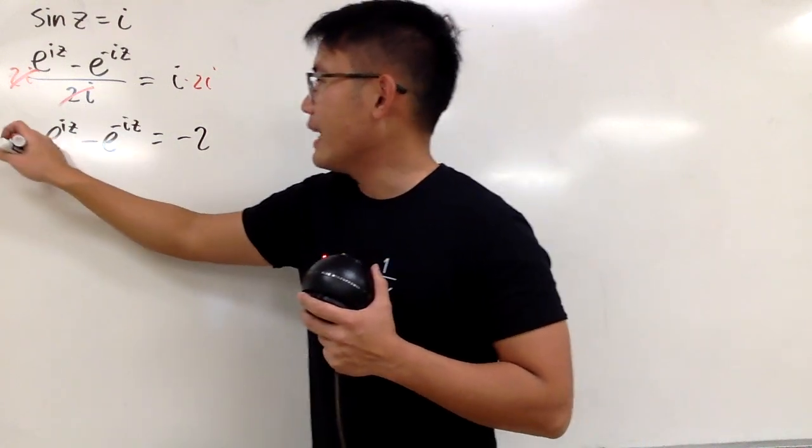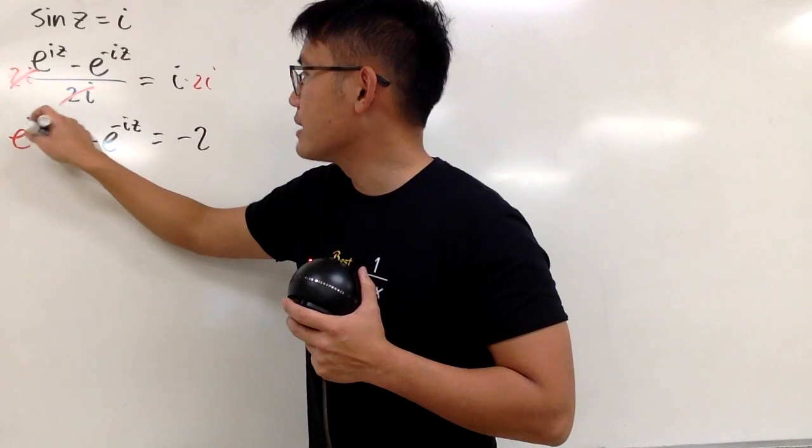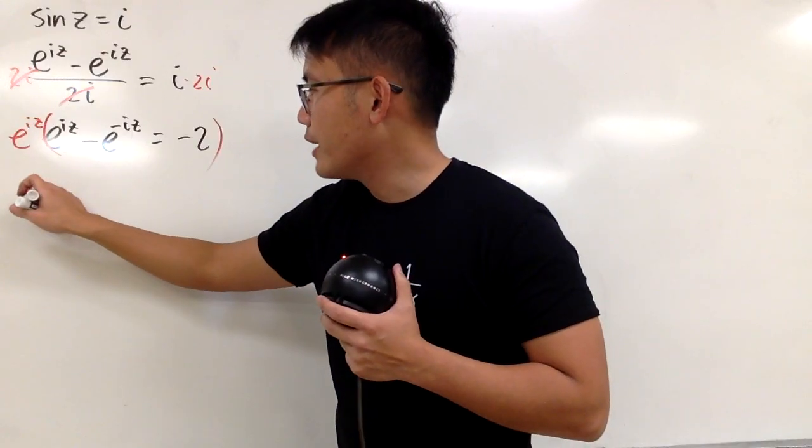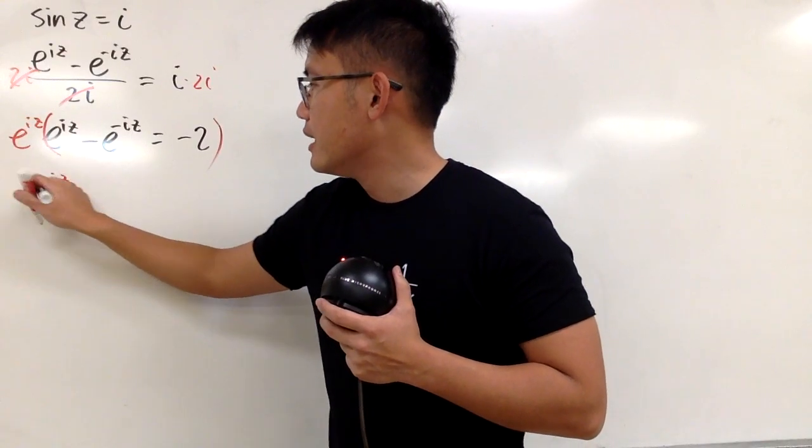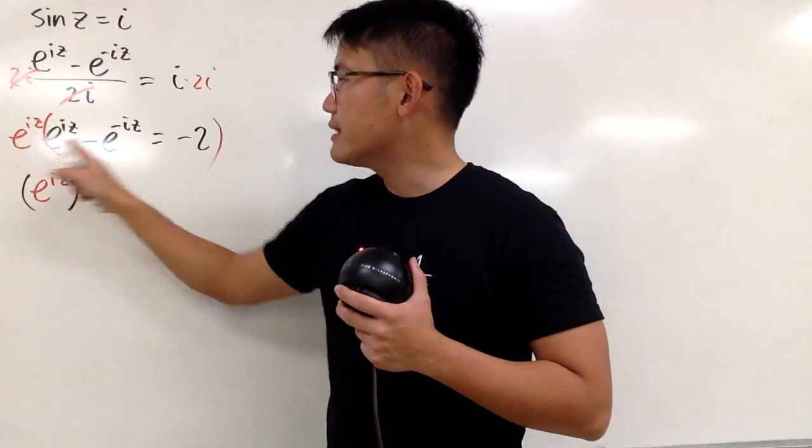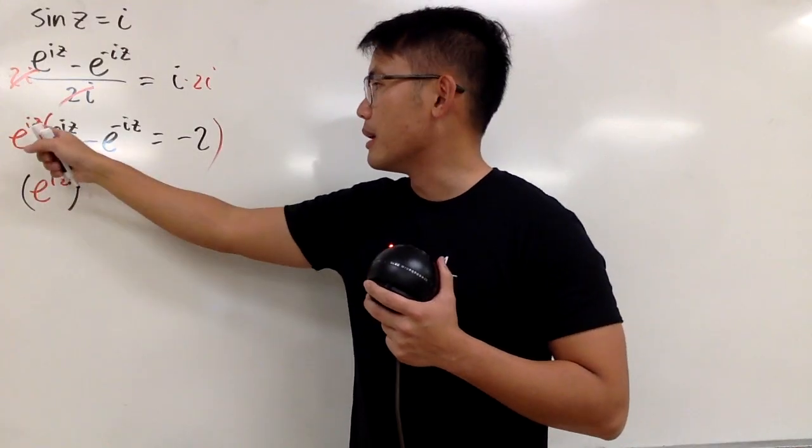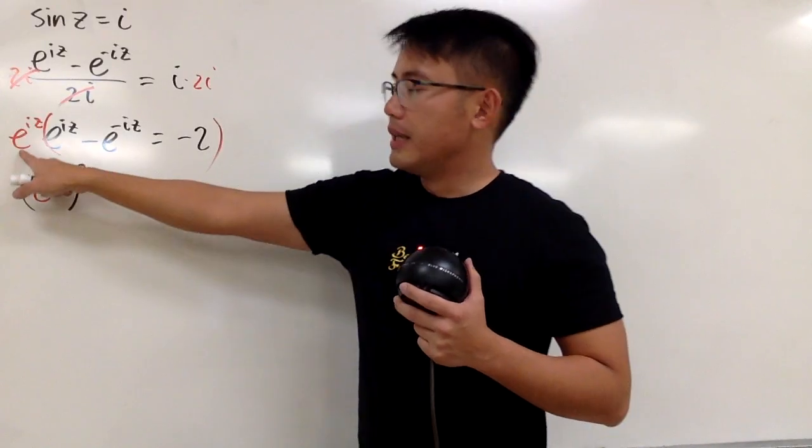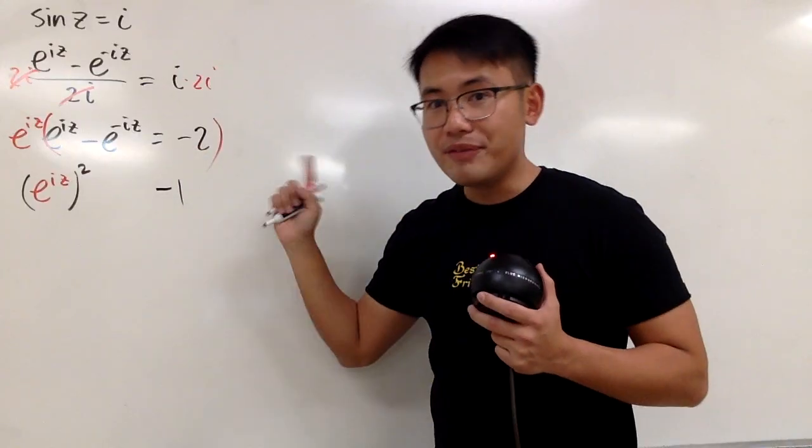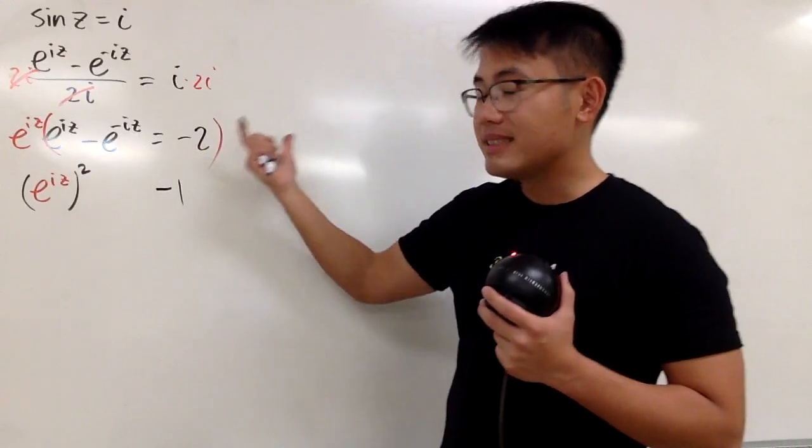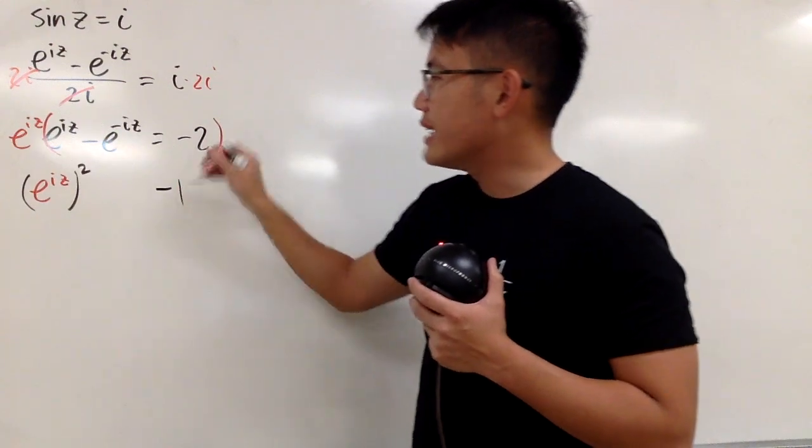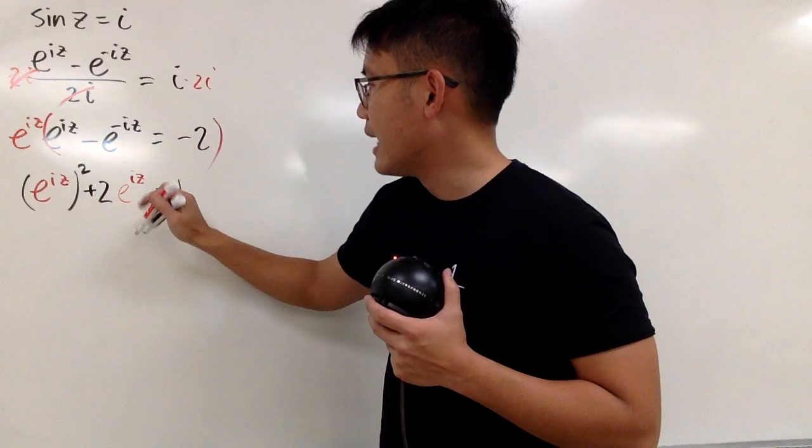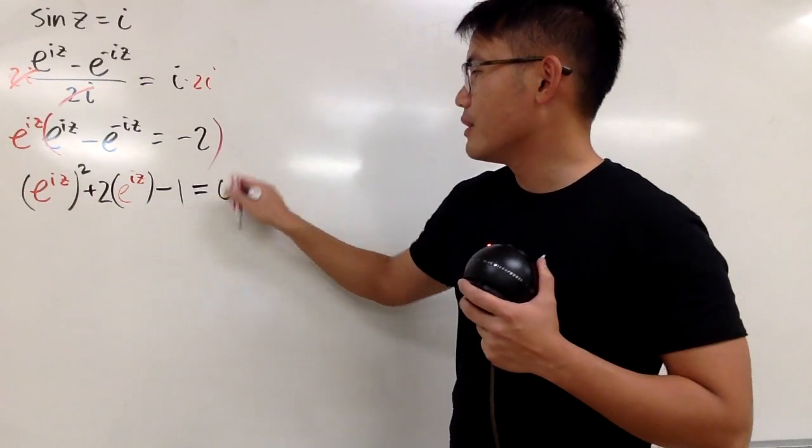Now, from here, I will multiply everything by e to the positive iz, so that I can get rid of the negative exponent. And you will see, this times that, we can write it as e to the iz, and then square. This times that, we just get minus 1, because the power will be just 0. And let me just write it down right here. And then, this times that will be negative 2 e to the iz. That's on the right-hand side, though. Let me bring to the left, so I get plus 2 e to the iz, like this. And it's equal to 0.